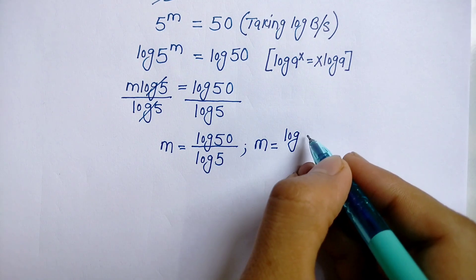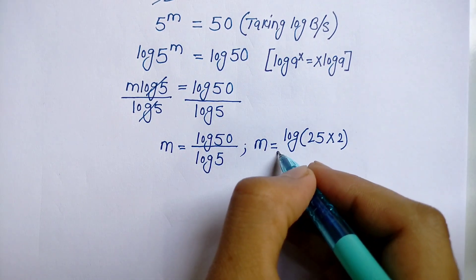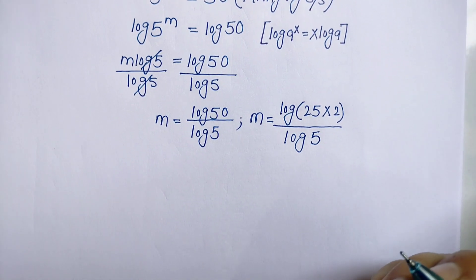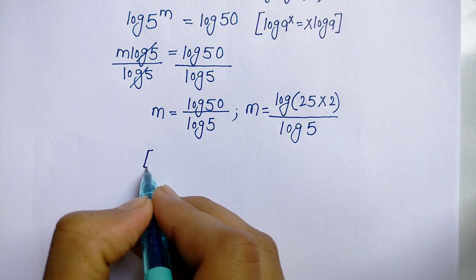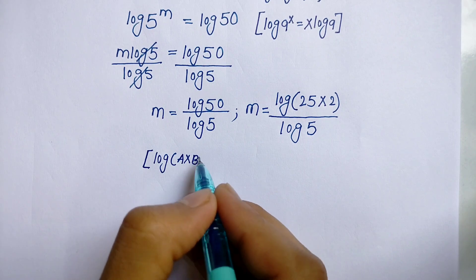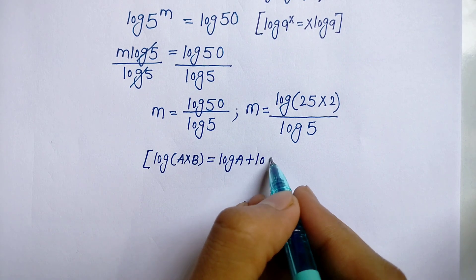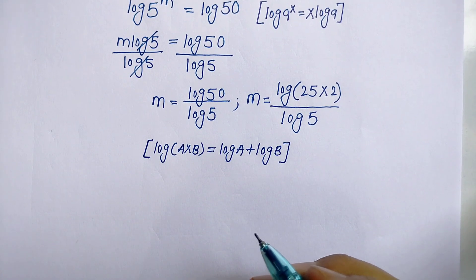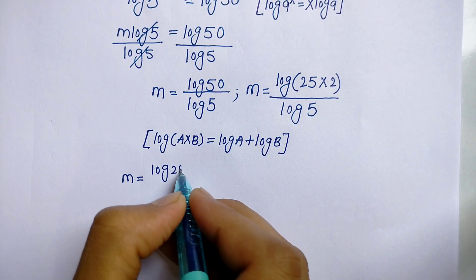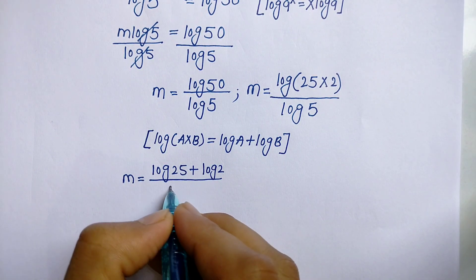Now we know the product rule of log: log of a times b is equal to log a plus log b. Applying this formula to log 50, we get m is equal to log 25 plus log 2, all upon log 5.